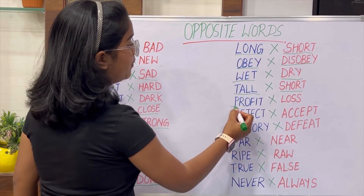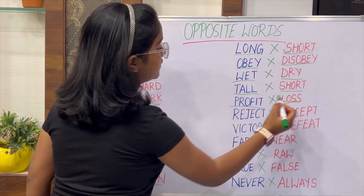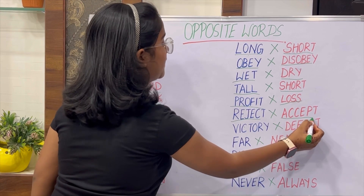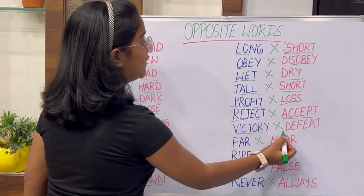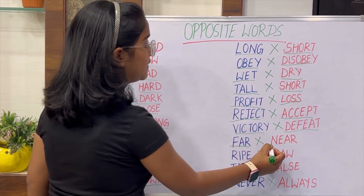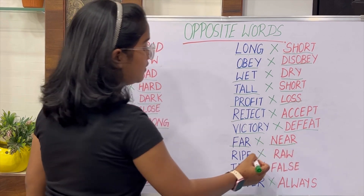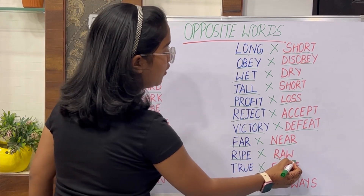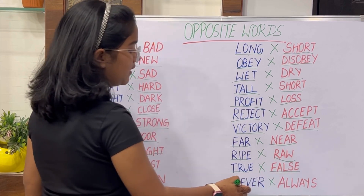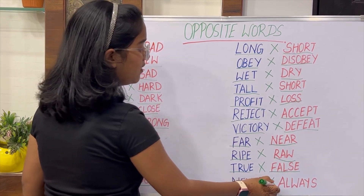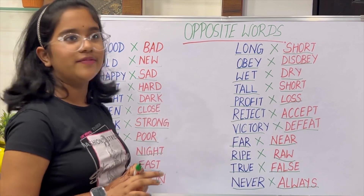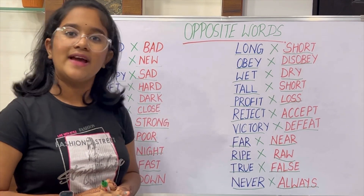Profit and loss, reject and accept, victory and defeat, far and near, ripe and raw, true and false, never and always. I hope you learned something about opposite words. Thank you!